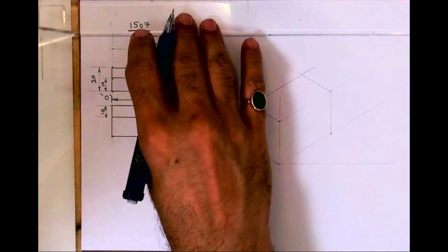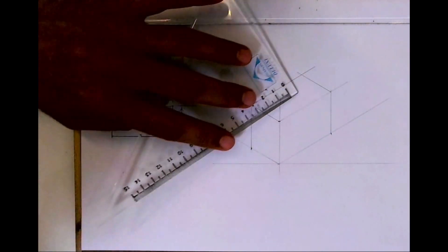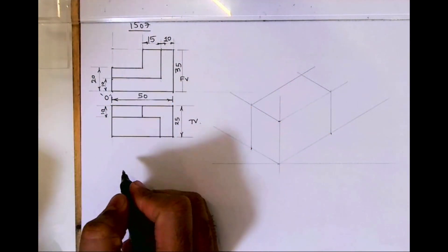So first we will complete the box. After that, if you see this, there is a 10 mm over here. Now see this, there are two parts.